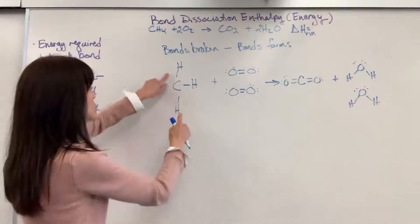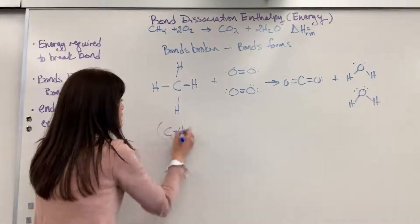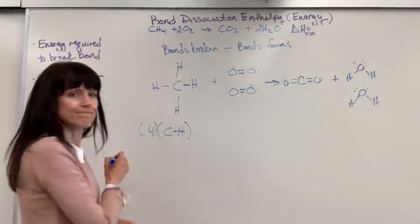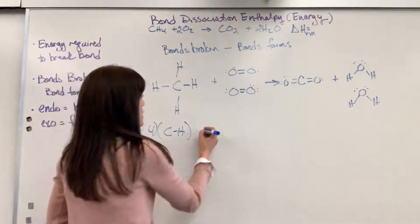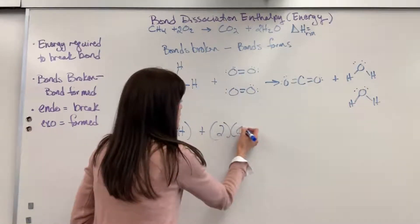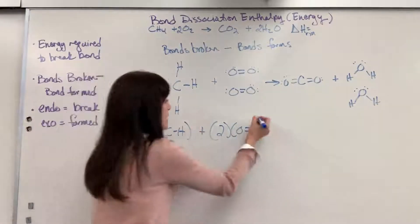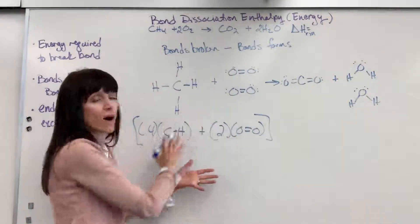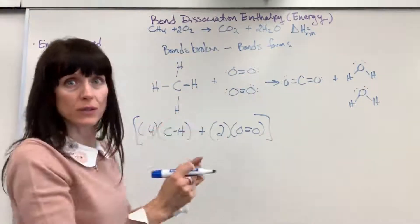Now let's go count up the bonds. I have one, two, three, four carbon hydrogen bonds that I'm going to have to break. Four carbon hydrogen bonds. And then we're going to have to break two of the oxygen double bonds. And I'm going to put this whole thing in brackets. We're going to add up all of the bonds broken. That's the energy required to break those bonds.